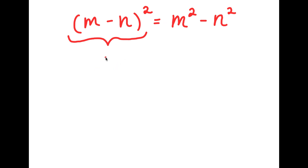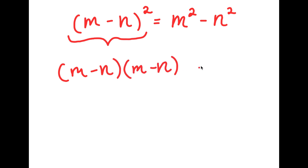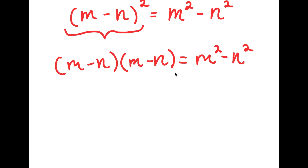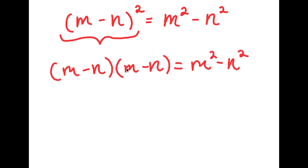I'm going to rewrite this as m minus n times m minus n. From here, I'm going to expand this by multiplying these two.